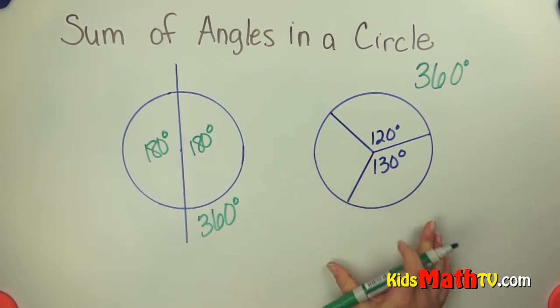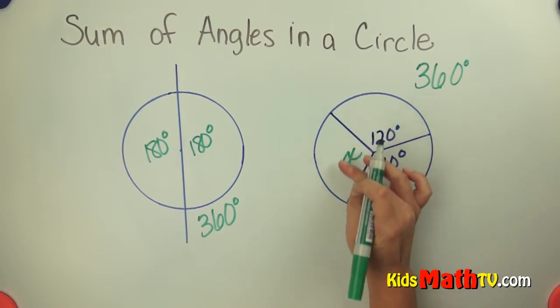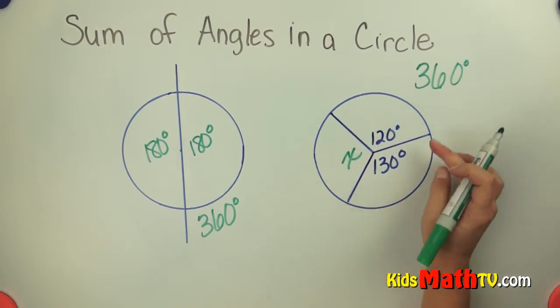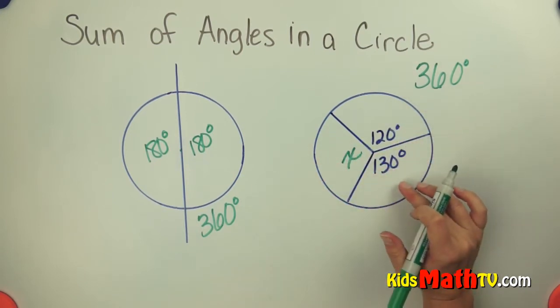So we can use that information to find a missing side. So if we want to find the measure of angle x here, or how many degrees are here in this angle, we can use the 360 as the total to help us with that.